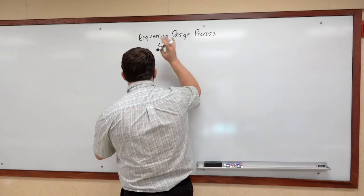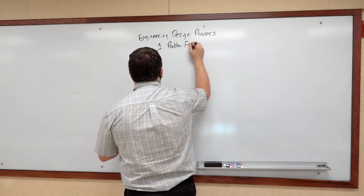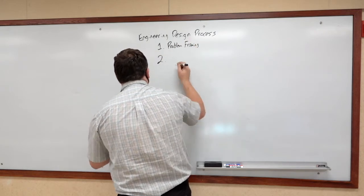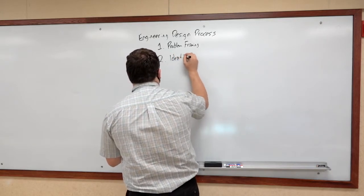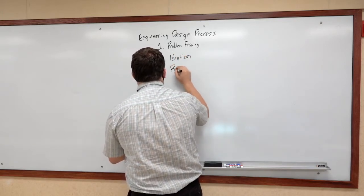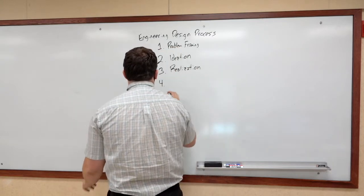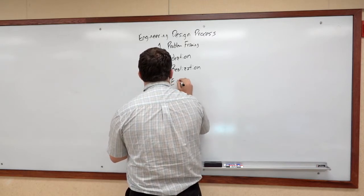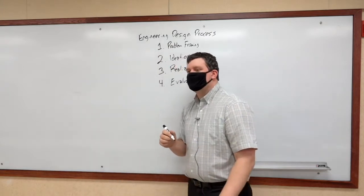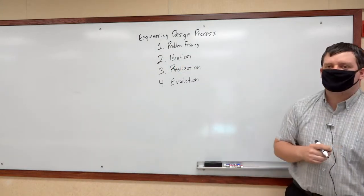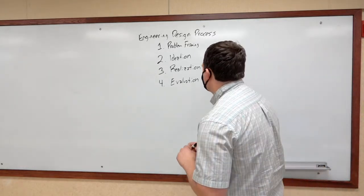The steps of the engineering design process are: first, problem framing; second, ideation, where you come up with ideas; third, realization, where you choose an idea and create it for real; and last, evaluation or analysis, where you determine whether or not your solution effectively solved the problem and what next steps you need.